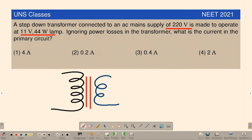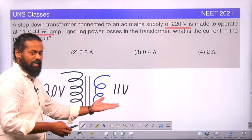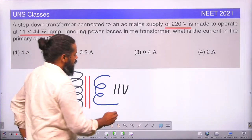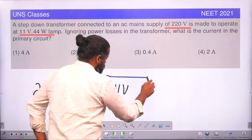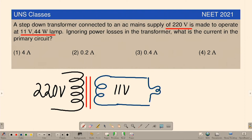Here how much voltage you are giving? 220 volt you are giving. And here you are obtaining 11 volt in the step-down transformer. In the secondary you are obtaining 11 volt and you are connecting this to a bulb of 44 watts.